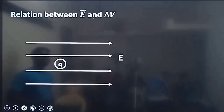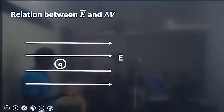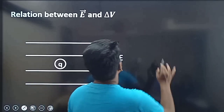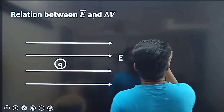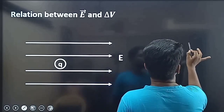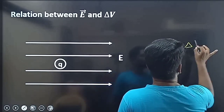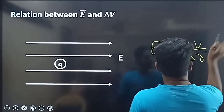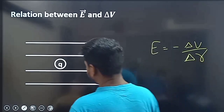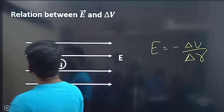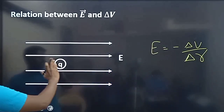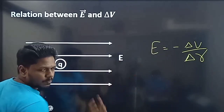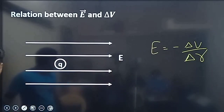Now the relationship between E and delta V — so that's the answer. E is equal to minus delta V by delta r. What is the potential?